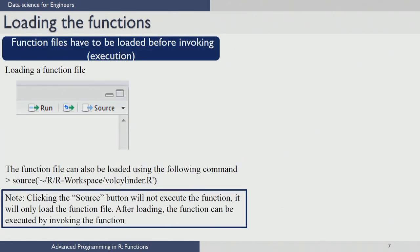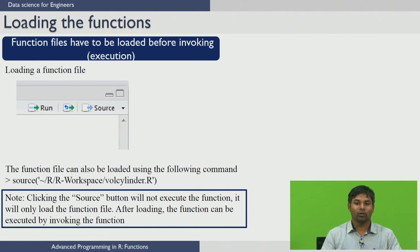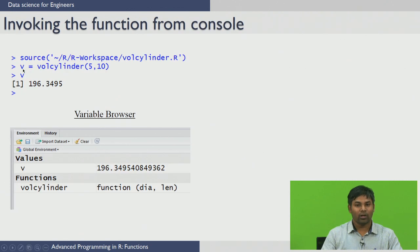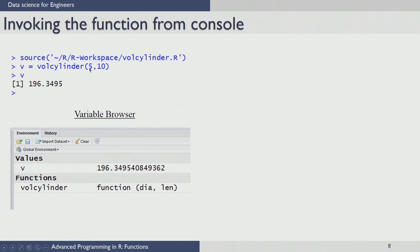Once you save, you need to load the functions before you invoke or execute them in R. To load a function, click on the Source button available in the R script menu. Clicking the Source button will not execute the function — it will only load the function file and make it ready for invoking. Once loaded, you can invoke the function from the console: for example, saving the result in variable v by calling 'vol_cylinder' with arguments phi and 10. This runs the function, calculates the volume, and returns it.